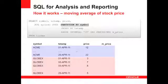Partitioning by symbol ensures that the average price for Acme is only based on the price data for Acme, and the average price for Globex is only based on the price data for Globex, and so on. That's shown here — we've highlighted the partition by statement and grouped the data below, color-coded to help you.